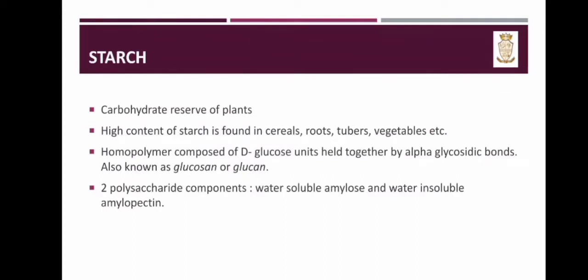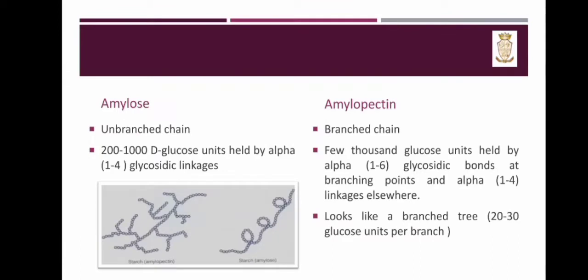Starch is found in high content in cereals, roots, tubers, vegetables, etc. It is a homopolymer composed of D-glucose units held together by alpha glycosidic bonds, also known as glucosin or glucan. It has two polysaccharide components: water-soluble amylose and water-insoluble amylopectin. Amylose is an unbranched chain consisting of 200 to 1000 D-glucose units held by alpha 1-4 glycosidic linkages. Amylopectin is a branched chain with few thousand glucose units held by alpha 1-6 glycosidic bonds at branching points and alpha 1-4 linkages elsewhere, looking like a branched tree with 20 to 30 glucose units per branch.